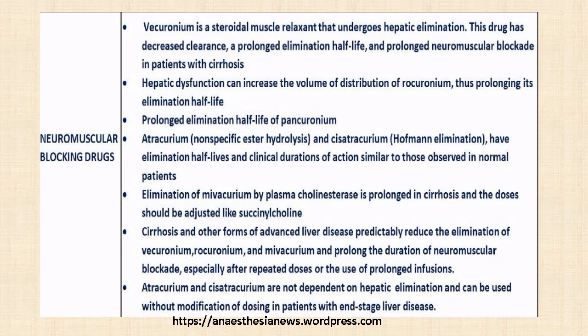Regarding neuromuscular blocking drugs: rocuronium is a steroidal muscle relaxant that undergoes hepatic elimination. Hepatic dysfunction can increase the volume of distribution of rocuronium, thus prolonging its elimination half-life. Pancuronium also has prolonged elimination half-life. Atracurium, eliminated by non-specific ester hydrolysis, and cisatracurium, eliminated by Hoffmann elimination, have duration of action similar to those observed in normal patients. Cirrhosis predictably reduces the elimination of rocuronium and mivacurium and prolongs the duration of neuromuscular blockade, especially after repeated doses or prolonged infusions. Atracurium and cisatracurium are not dependent on hepatic elimination and can be used without dose modification in patients with end-stage liver disease.